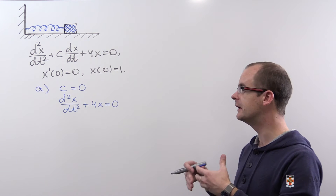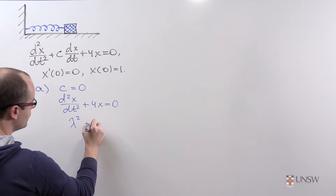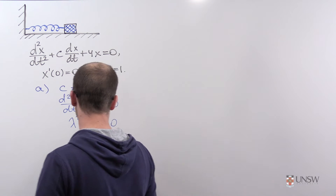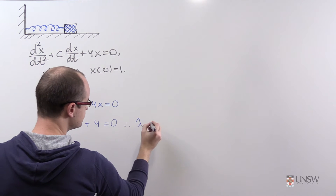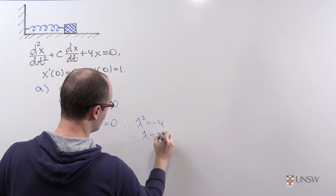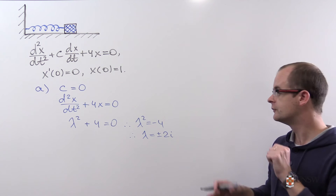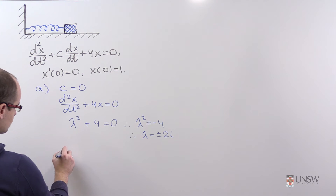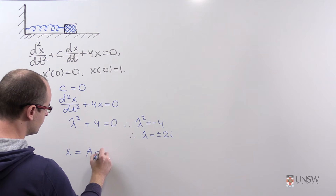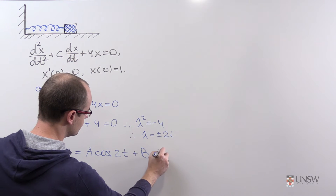To solve it, as usual, we consider the characteristic equation. For the second derivative we write lambda squared, and for the function itself lambda to the power 0. We solve this quadratic: lambda squared equals negative 4, so lambda equals plus or minus 2i. The roots of the characteristic equation are complex, so we can write the solution in terms of sines and cosines: x equals a cosine 2t plus b sine 2t.